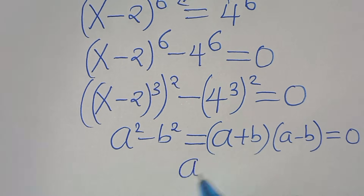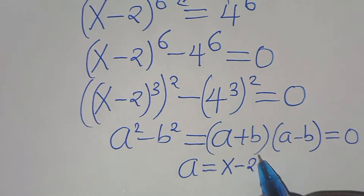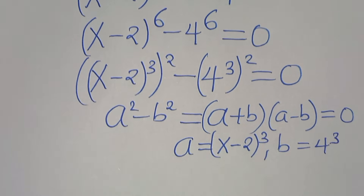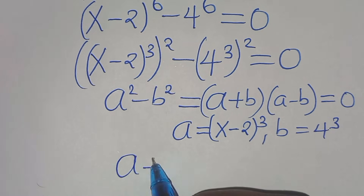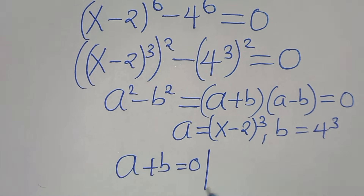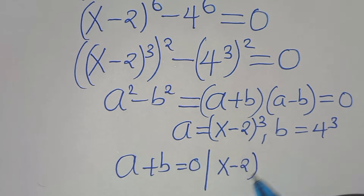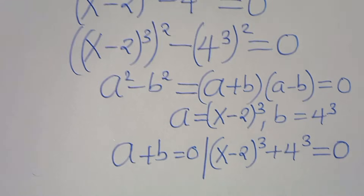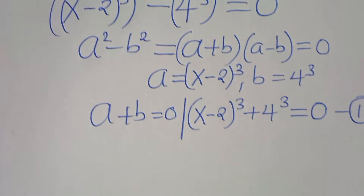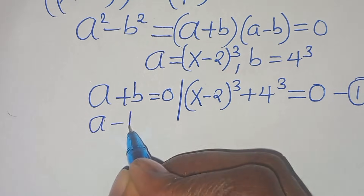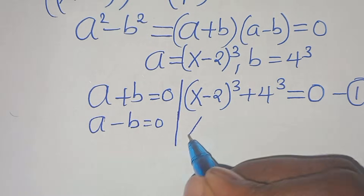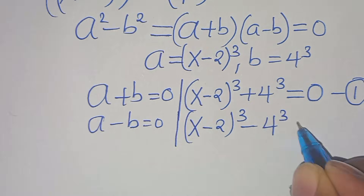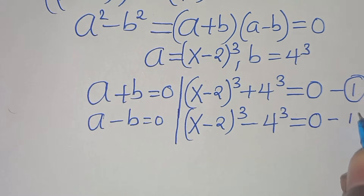From this equation we have that a is equal to x minus 2 raised to the power of 3, and b is equal to 4 to the power of 3. So this implies that a plus b equals 0, which is the same as x minus 2 raised to the power of 3 plus 4 to the power of 3 equals 0. Let's call this equation 1. Then we have a subtract b equals 0. Let's call this equation 2.